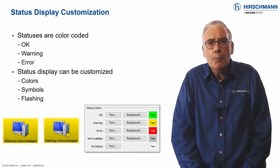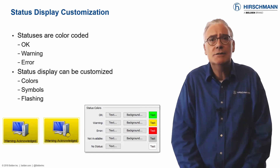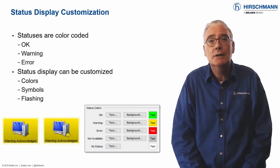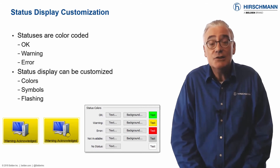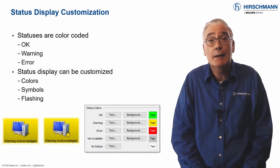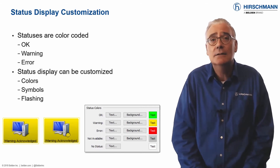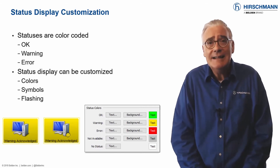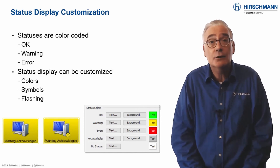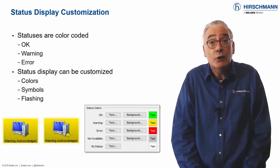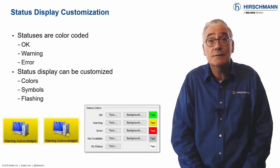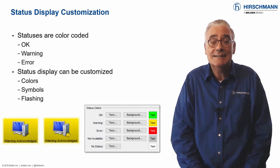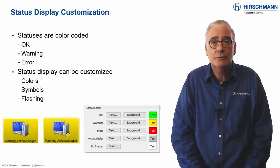For operators with color vision deficiency, there are many options. The colors used for status displays can be selected. Status symbols can be superimposed on device icons. The icons themselves can even be made to flash after a status change.